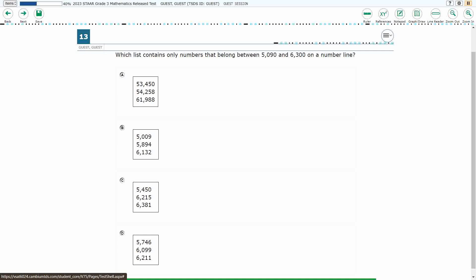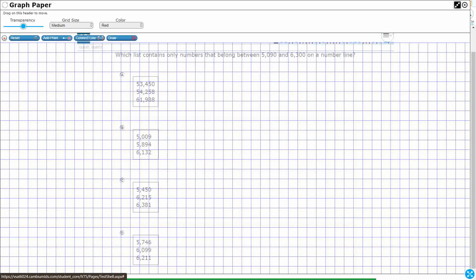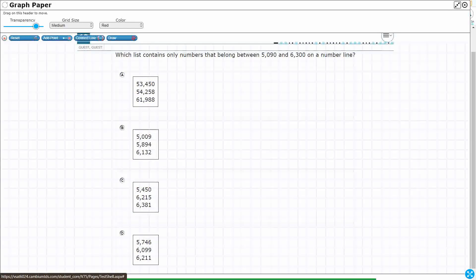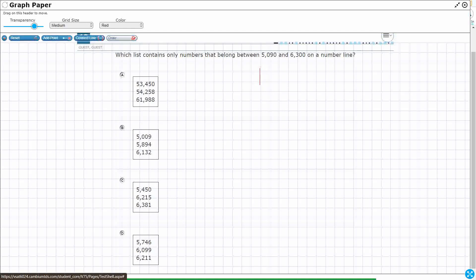So we've got four different lists of numbers. Each list has got three numbers, and it looks like we need to find numbers that belong between these two numbers here: 5,090 and 6,300. So we could draw a number line, but that's going to be a little bit strange. So what I'm going to do here is I'm going to draw like a vertical number line, and we're going to kind of think of it like a thermometer, right? Like zero down there is at the bottom. So let's say 5,000 is right here, and let's say 6,000 is right here.